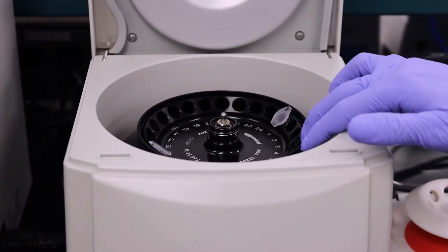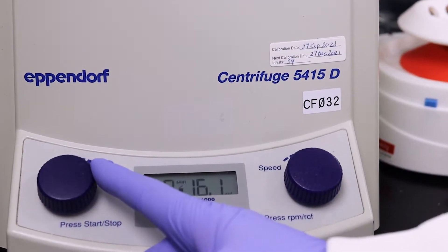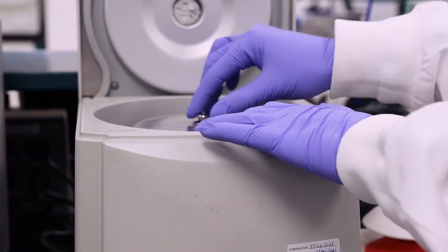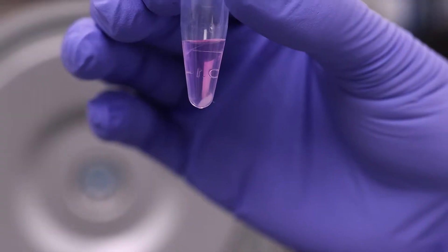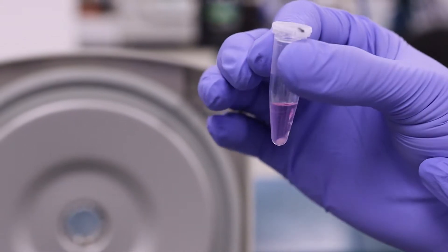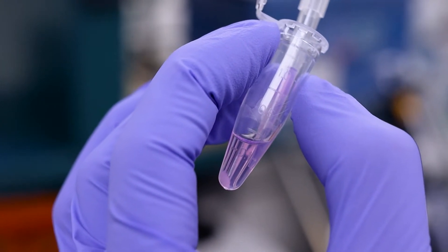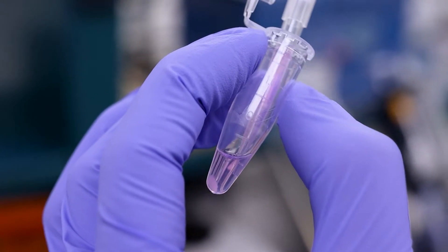Spin the lysate for 10 minutes at maximum speed in a benchtop centrifuge. Using a pipette with a small tip, transfer the supernatant containing the cytoplasmic RNA to another RNase-free tube.